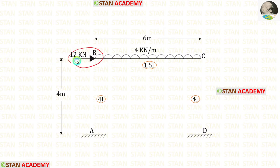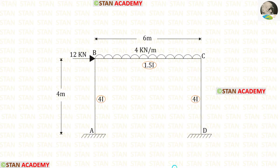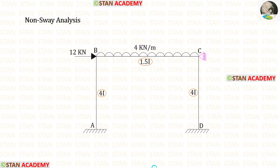Because of this load there will be sway. This load is acting towards the right side, so the sway will occur towards the right side. Since this frame is a sway type frame, we have to do the analysis two times — first non-sway analysis and then sway analysis. Now let us start the non-sway analysis.